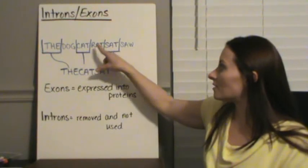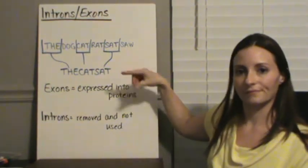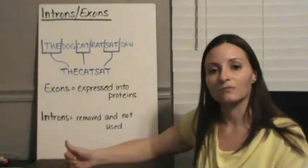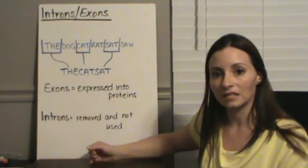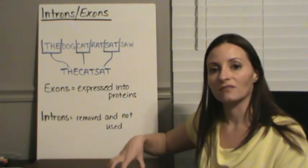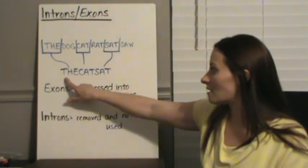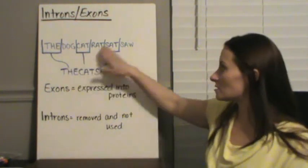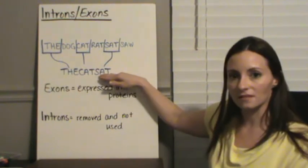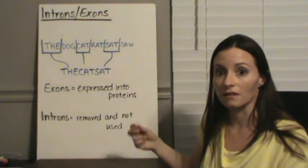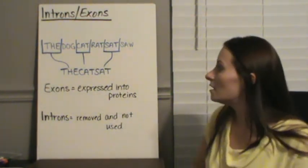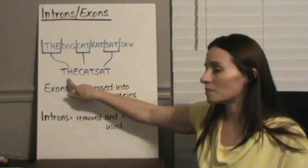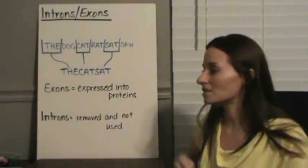So it's like reading this sentence originally. The dog, cat, rat, sat, saw. Doesn't completely make sense. But if we pull out the pieces that we need, we can figure out what it's supposed to mean. The cat sat. So we pull out the pieces and we get a sentence that actually is coherent. The cat sat.